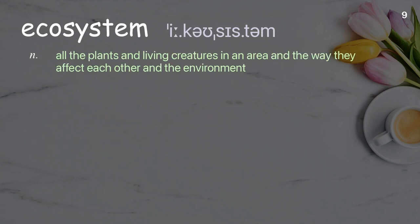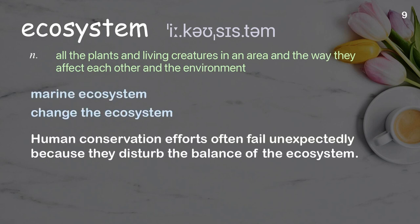Ecosystem: all the plants and living creatures in an area and the way they affect each other and the environment. Examples: marine ecosystem, change the ecosystem. Human conservation efforts often fail unexpectedly because they destroy the ecosystem and disturb the balance of the ecosystem.